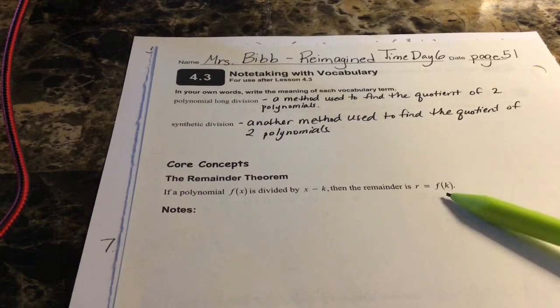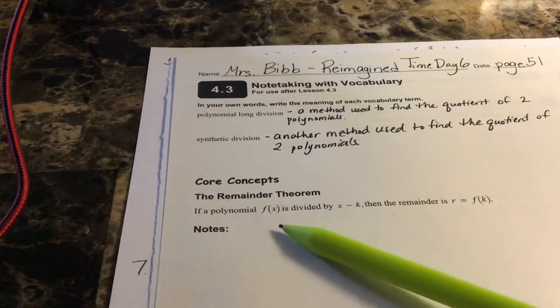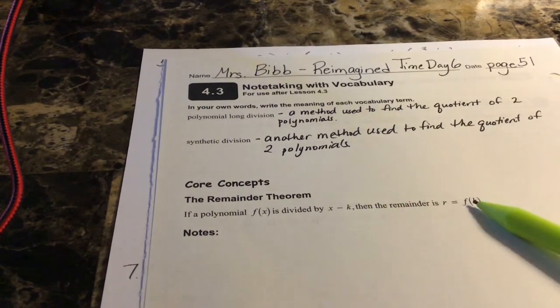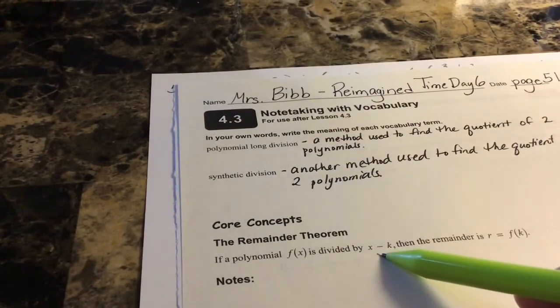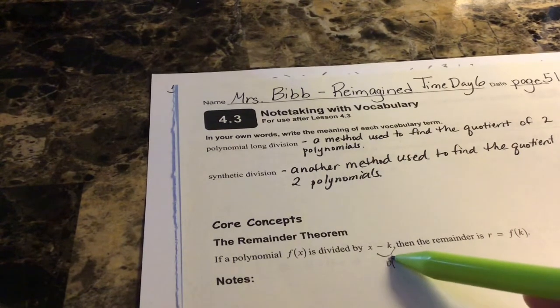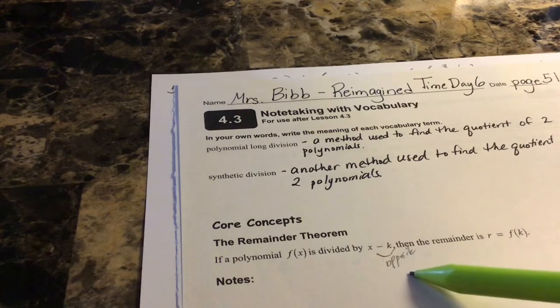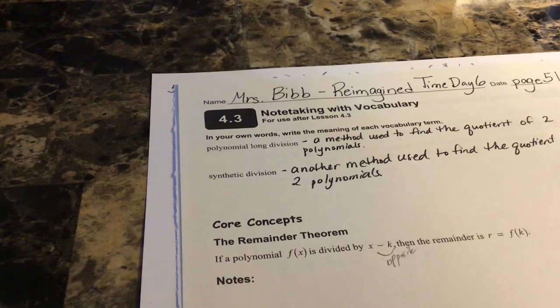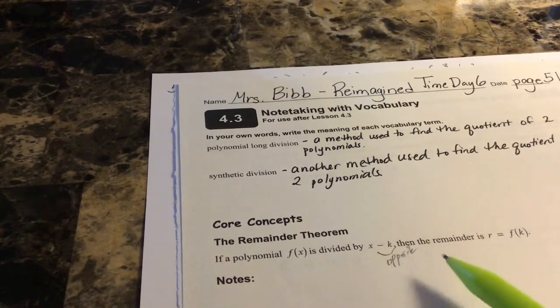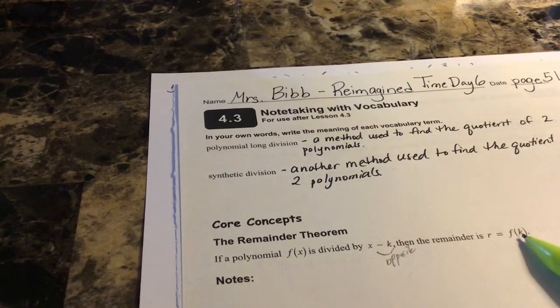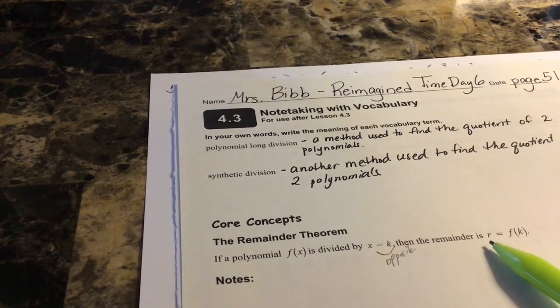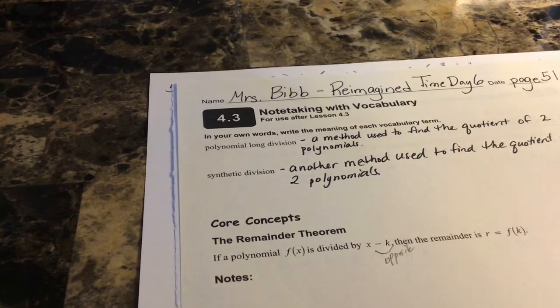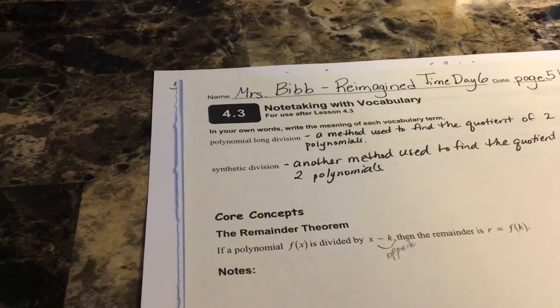The remainder theorem simply says that if you've got a polynomial f(x) and it's divided by x minus k, then the remainder can be found using substitution, substituting k in. Which means take the opposite of what you have here, just like we did when we were finding the p's and q's. When we're doing intercept form, we take the opposite of this number and you substitute it into the function to find the remainder. That's all the remainder theorem is, and it's a quick way to find the remainder or to match answers without actually doing long division. So let's go through some examples.